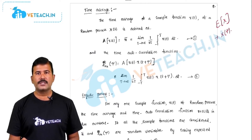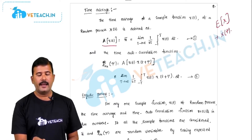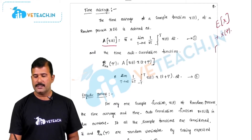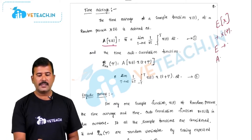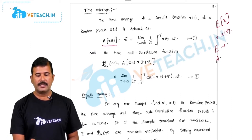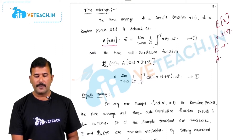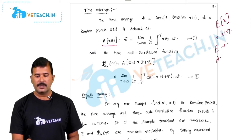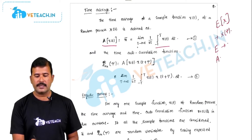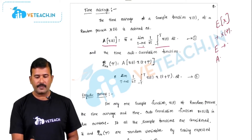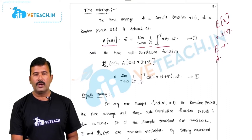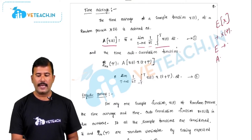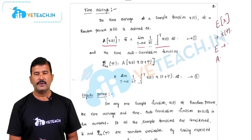For a sample function, the time average is represented as A of x of t. E is the statistical average and A is the time average. The time average of a sample function is defined as: limit t tends to infinity, 1 by 2t, integral from minus t to t of x of t dt. The sample function is considered in an interval minus t to t, extended to infinity and divided by the whole interval 1 by 2t. This gives the time average of the sample function.